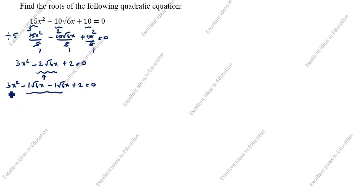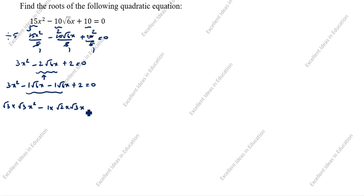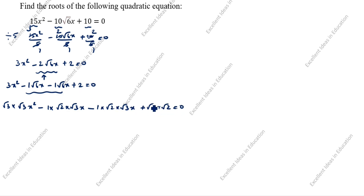Next, we factor each part using surds: √3·x times √3·x gives 3x², and √2 times √6 gives the √6·x terms. We write: √3·x(√3·x minus √2) minus √2(√3·x minus √2) equals 0.